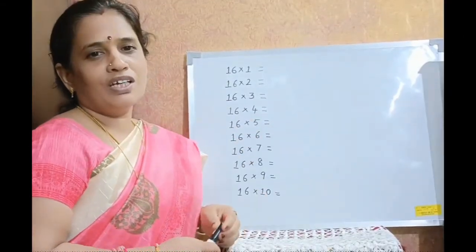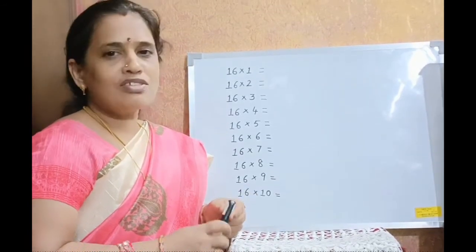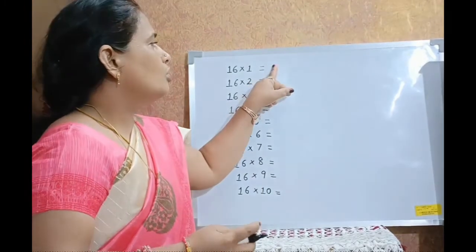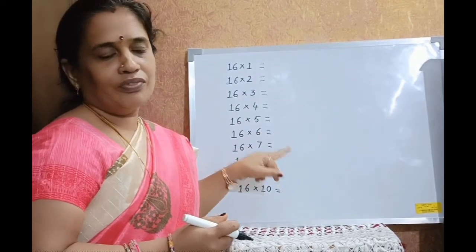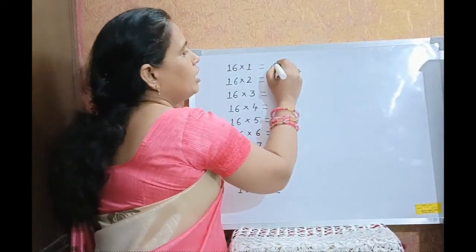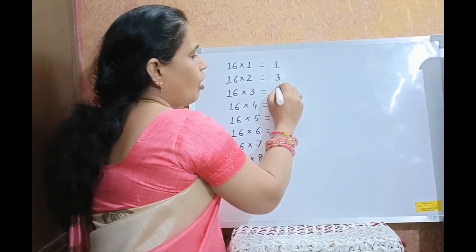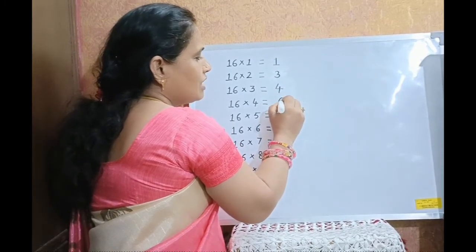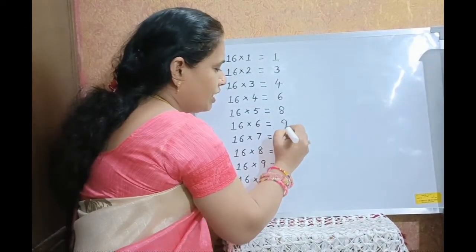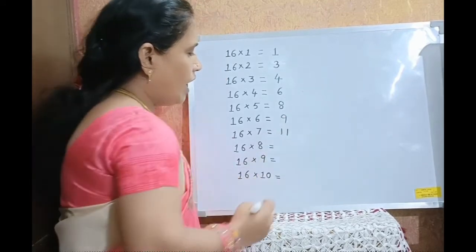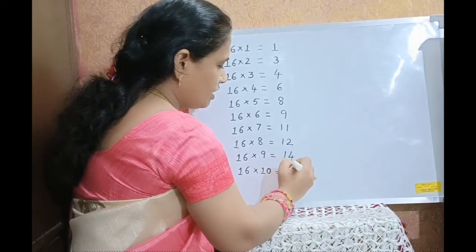For the table of 16, I am going to tell 2 methods. For the first method, you have to write 2 consecutive odd numbers and then 3 consecutive even numbers. First write 2 odd numbers: 1, 3, and then 3 even numbers: 4, 6, 8, and then 2 odd numbers: 9 and 11, and then 3 even numbers: 12, 14, 16.